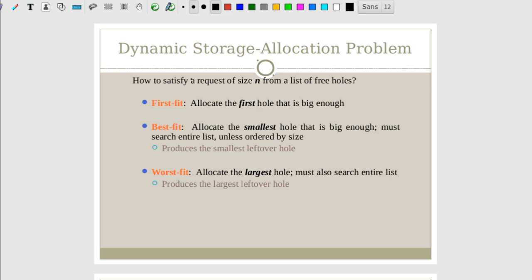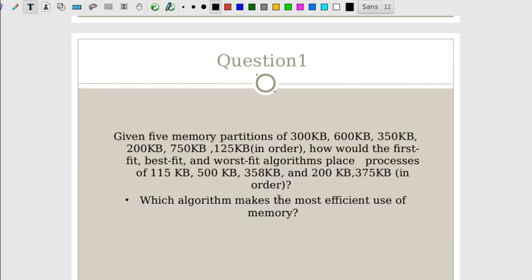I will explain this with the help of an example. Given five memory partitions of size 300 KB, 600 KB, 350 KB, 200 KB, 750 KB, and 125 KB — how would the first fit, best fit, and worst fit algorithms place processes of size 115 KB, 500 KB, 358 KB, 200 KB, and 375 KB in order? Which algorithm makes the most efficient use of memory?